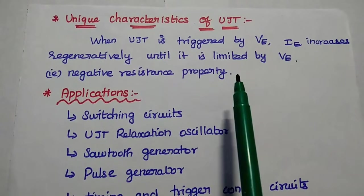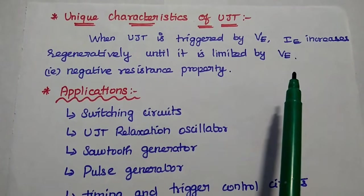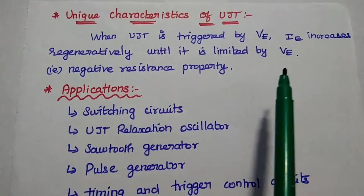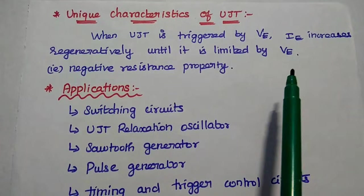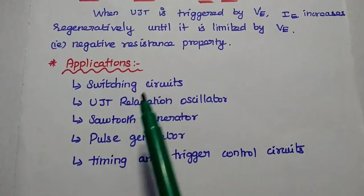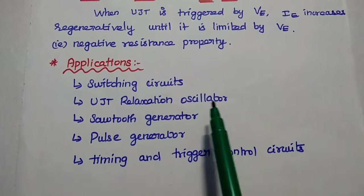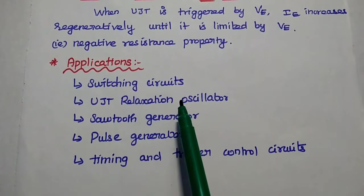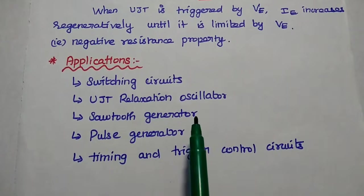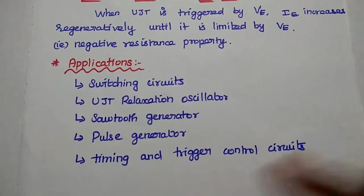The unique characteristic of UJT: when triggered by emitter voltage, the emitter current starts increasing regeneratively until it is limited by applying a negative voltage. This is called the negative resistance property. Because of this property, UJT is widely used in many applications — switching circuits, UJT relaxation oscillator, sawtooth generator, pulse generator, and timing and trigger control circuits.